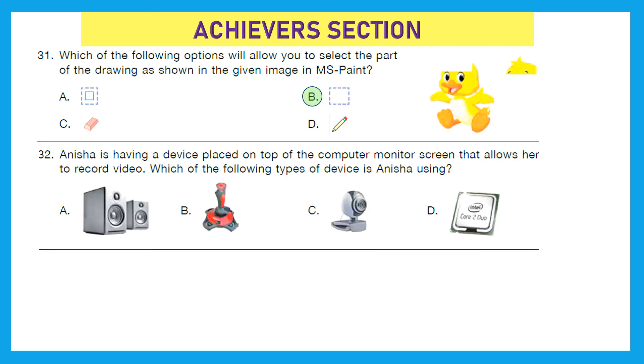Question 32: Anisha is having a device placed on top of the computer monitor screen that allows her to record video. Which of the following types of device is Anisha using? It is camera, webcam - option C.